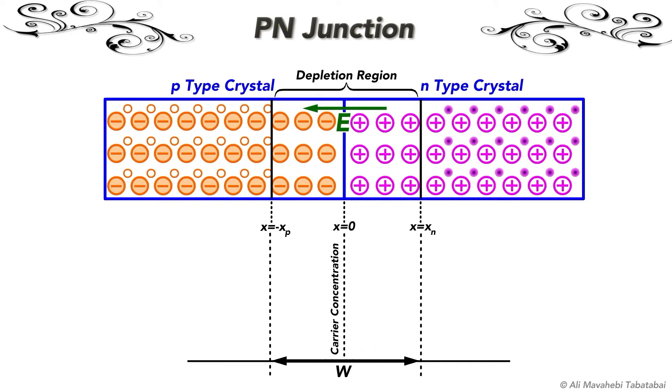So the concentration of holes in the p-side, which is shown by p subscript p, is Na. The subscript p indicates the type of the semiconductor. In this case, it is p-type. In the p-side, electrons are minority carriers. So their concentration is indicated by n subscript p0. p indicates the type of semiconductor and 0 means the semiconductor is in thermal equilibrium, which means the temperature is constant and no extra energy is applied to the semiconductor.